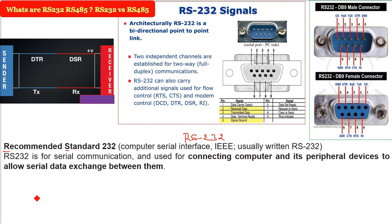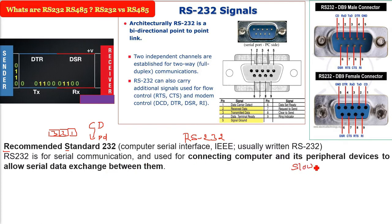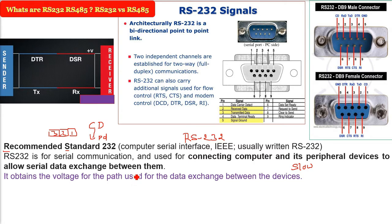RS-232 is for serial communication, meaning bit by bit, byte by byte, the communication takes place. It is used for connecting a computer and its peripheral devices to allow serial data exchange between two parties. When the bit rate you want is low and the length of the wire should also be small, RS-232 is used there.